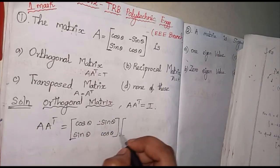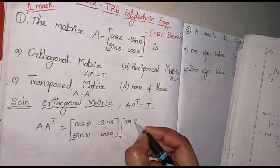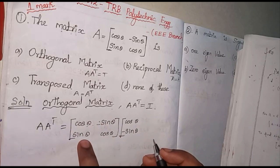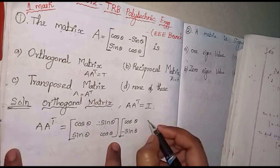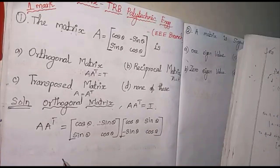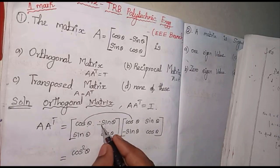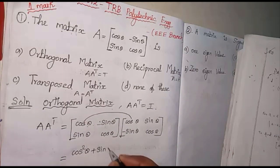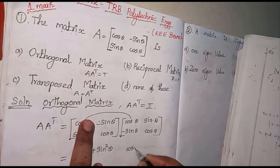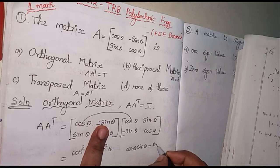The transpose is not equal to A directly, so it is not a symmetric matrix. Now let's check the multiplication. We have the matrix with cos theta, minus sin theta, sin theta, cos theta multiplied by its transpose. We compute cos into cos, giving cos squared theta, then move into the sin theta terms.